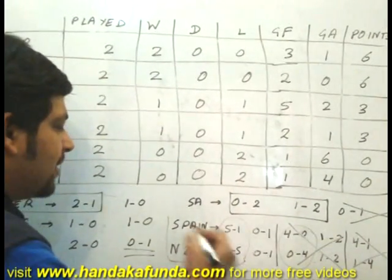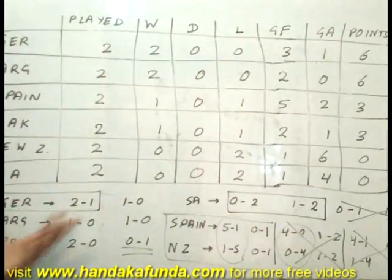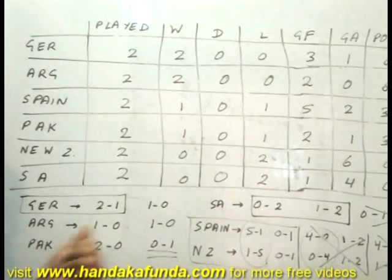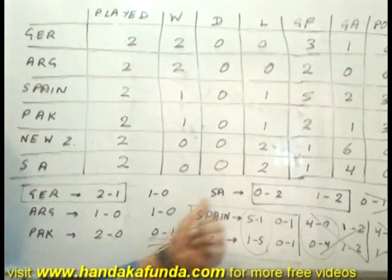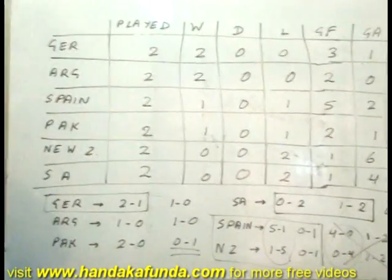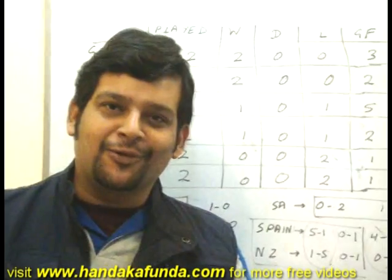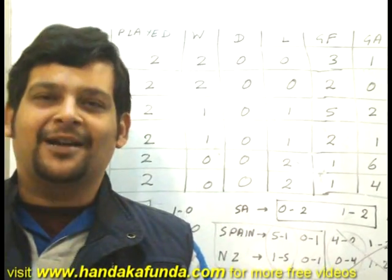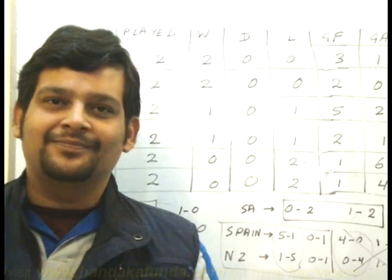Now you have the complete table of conclusive scores for the first two rounds — Germany, Argentina, Pakistan, South Africa, Spain, and New Zealand. With the help of this, I am sure you will be able to solve the rest of the questions. If you can't, please post on our Facebook page and we will get back to you. Thank you. To get a video response, connect with us on our Facebook page at facebook.com/handakafanda. Thank you.